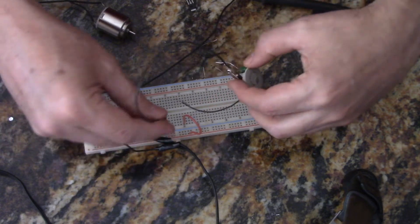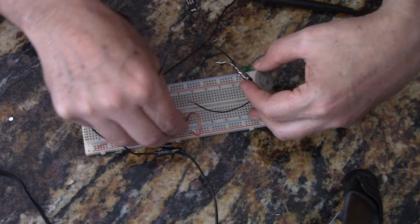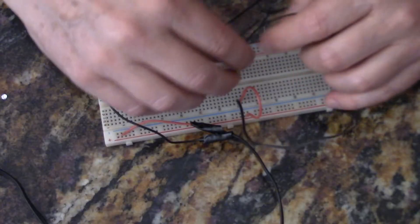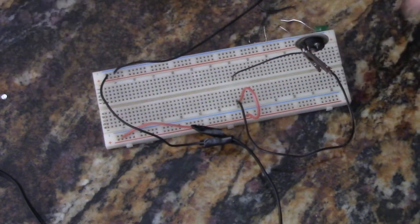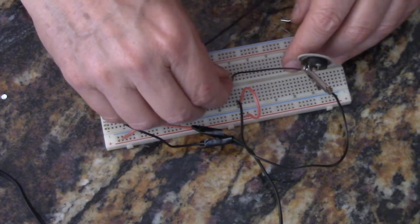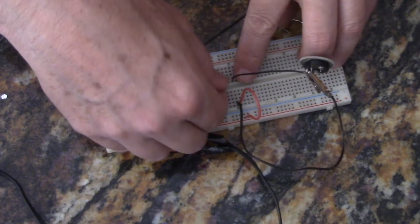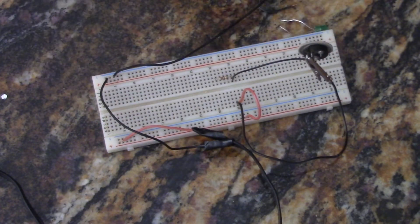So a voltage divider takes power coming in, going through the resistor. Here's our first resistor. And then we have another resistor.